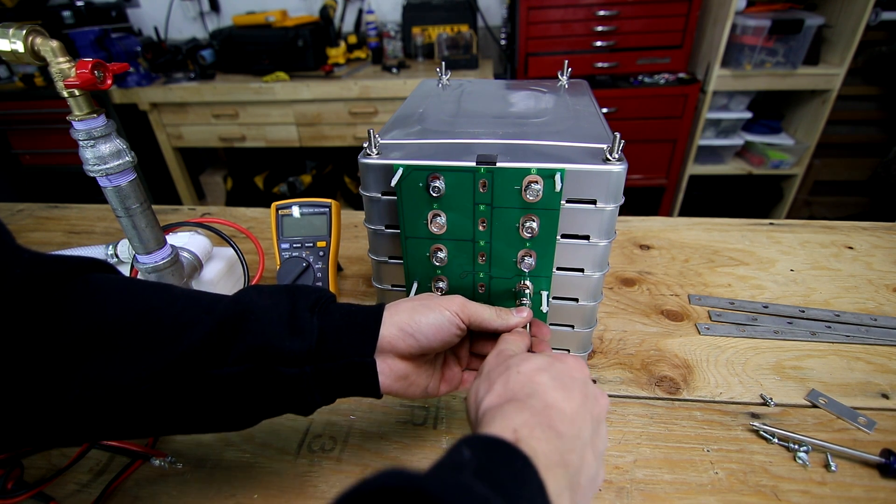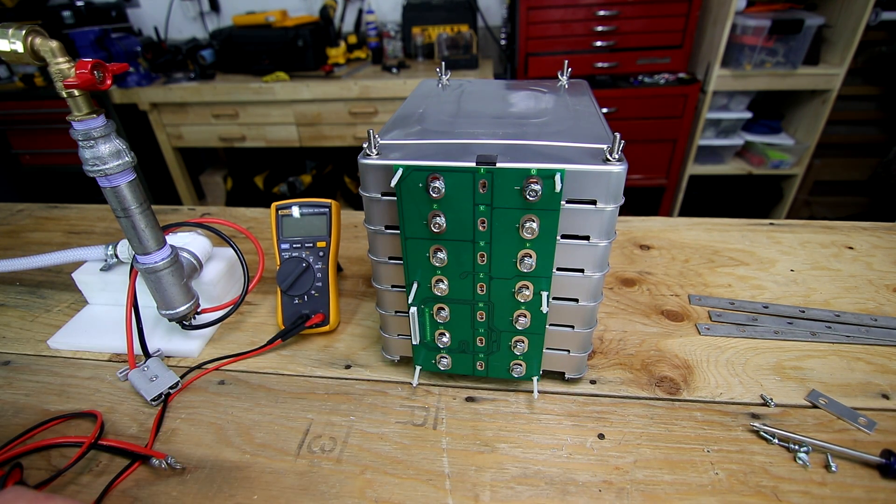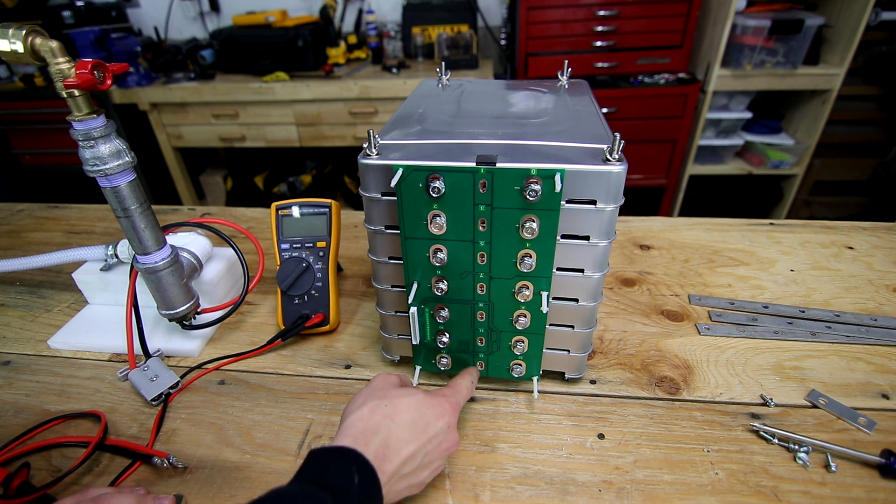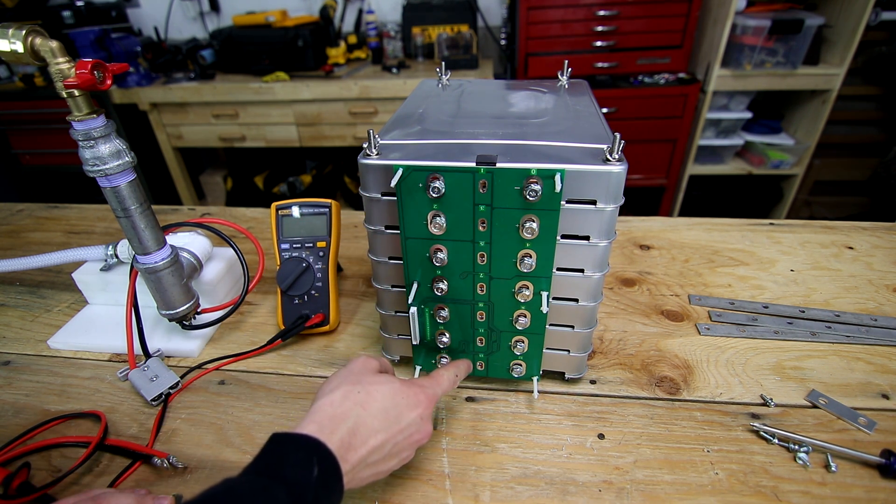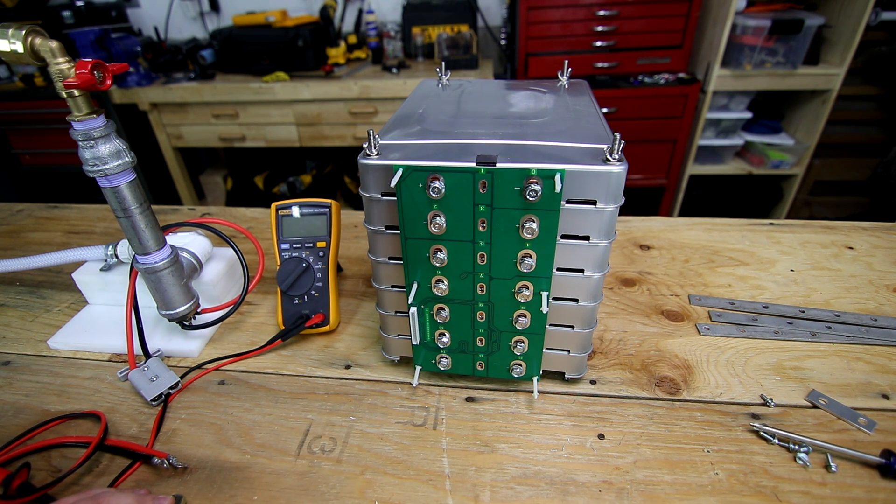Now if you were using the aluminum bus bars making them at home it would be pretty easy as well and would save you money in the long run. I'm not going to put in any of these screws on the center post because I'm going to manually check these cell voltages with my Fluke meter and I'm actually not going to run this with a BMS.